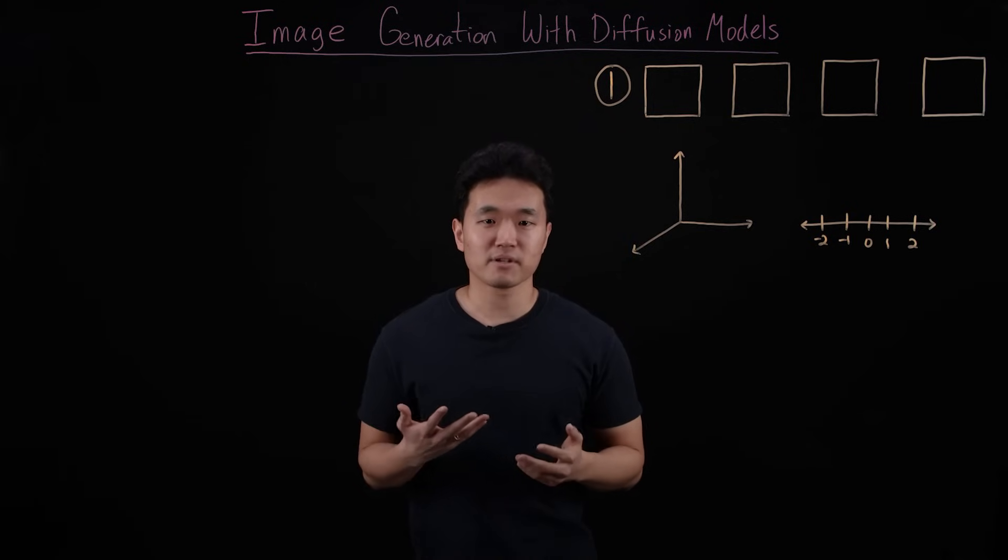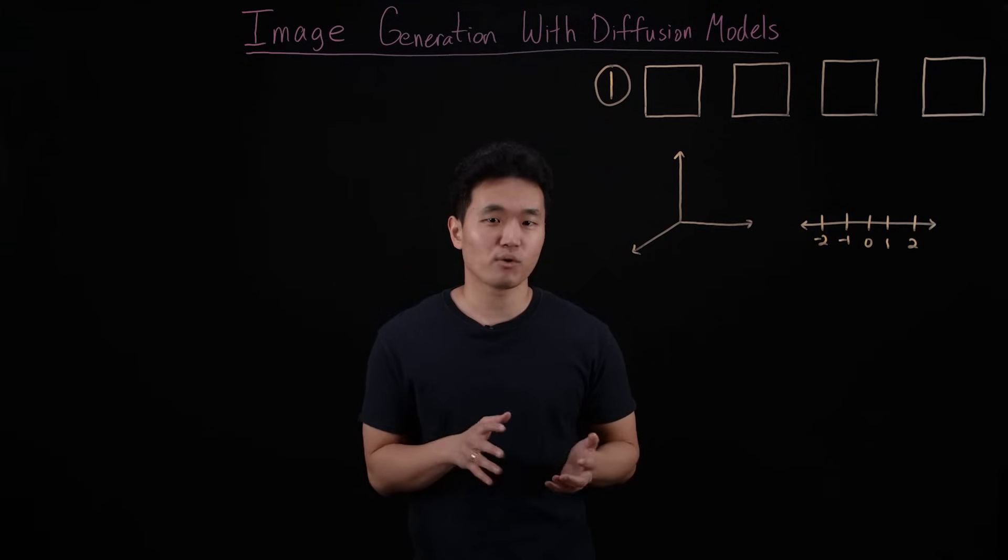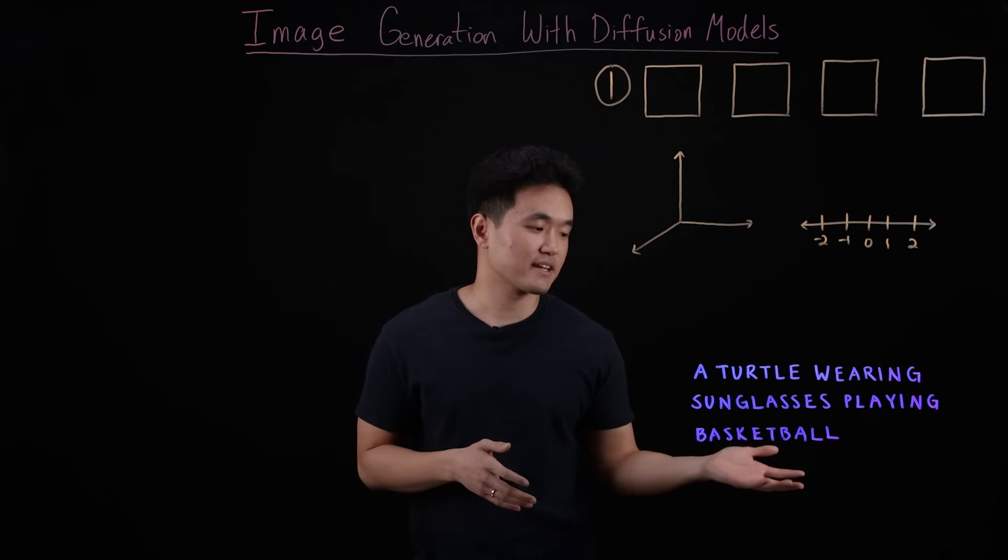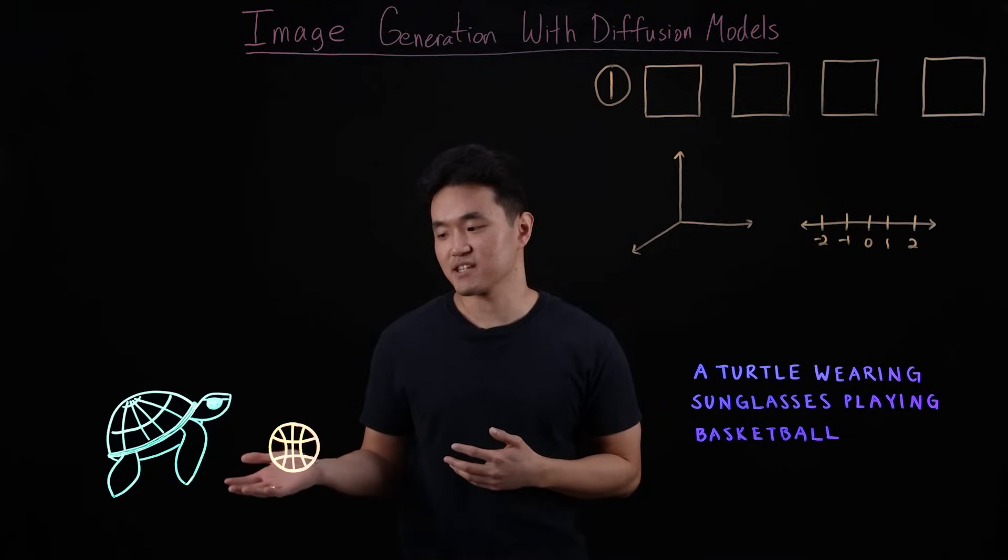Diffusion models power popular AI image tools, like DALL-E 3 and Stable Diffusion where you can go from a prompt like a turtle wearing sunglasses playing basketball, to a hyper-realistic image of just that.